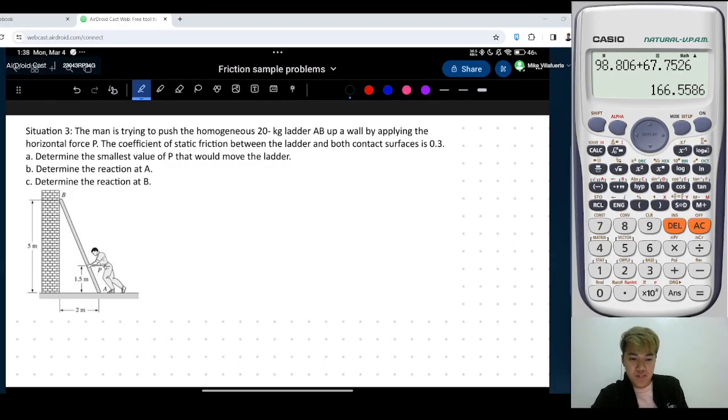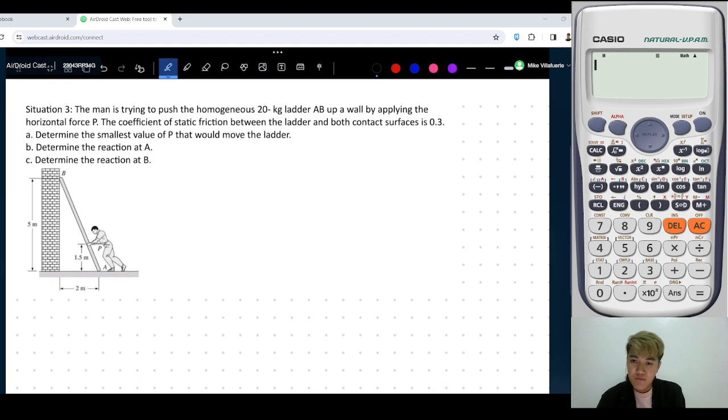Okay, next problem. Situation number 3. The man is trying to push the homogeneous 20 kg ladder up a wall by applying the horizontal force P. The coefficient of static friction between the ladder and both contact surfaces is 0.3. Determine the smallest value of P that would move the ladder. Determine the reaction at A. Determine the reaction at B.